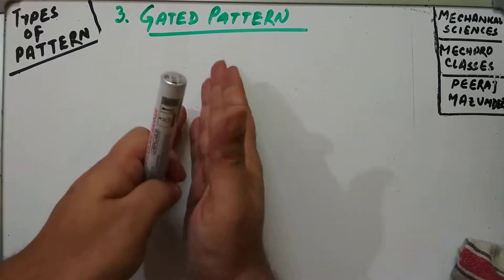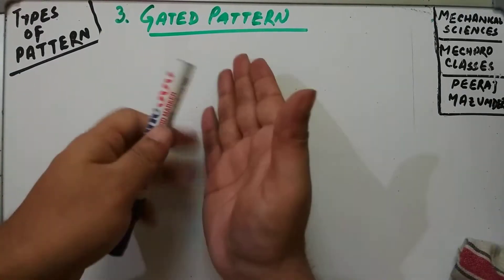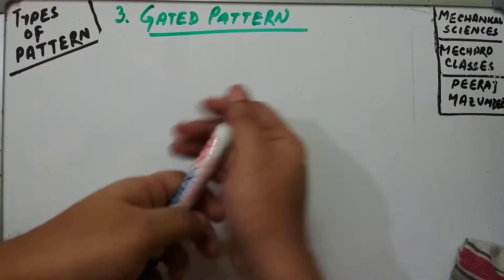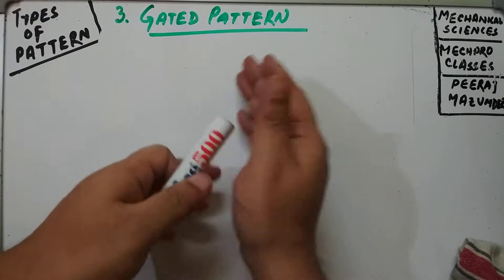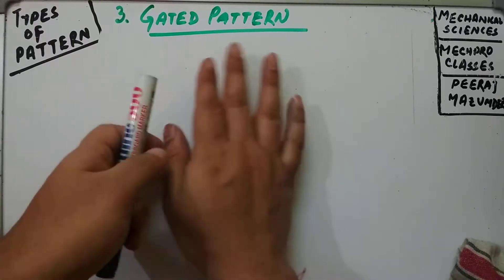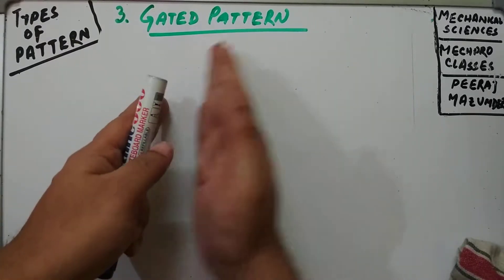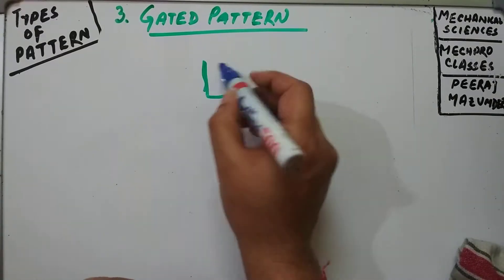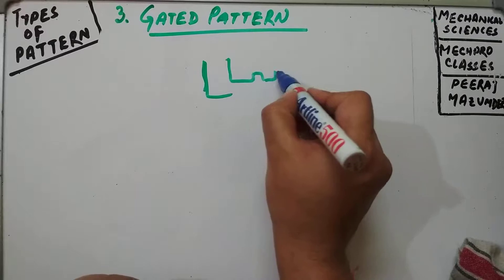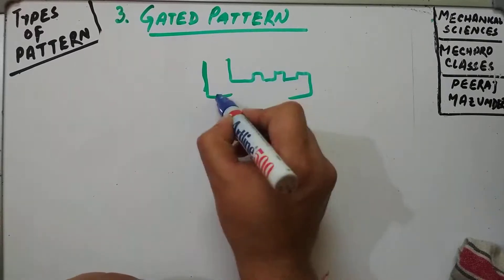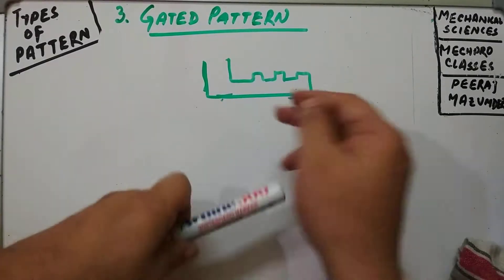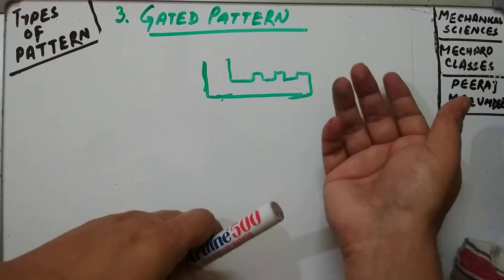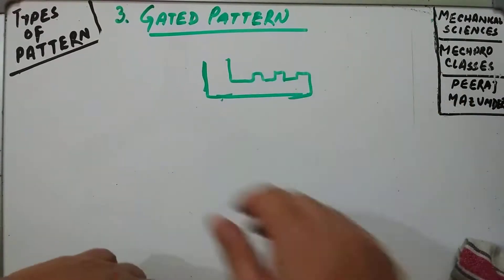The gated pattern is an improvement over the simple pattern where the gating and runner systems are integral with the pattern. This eliminates hand cutting of the runner and gates, thereby improving the productivity of the molder.